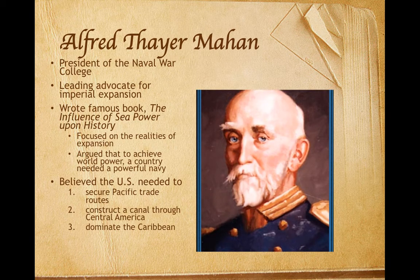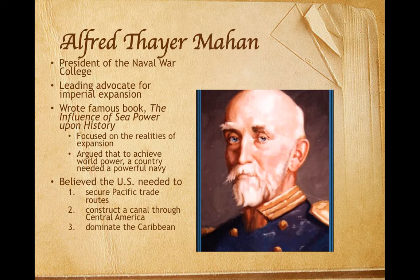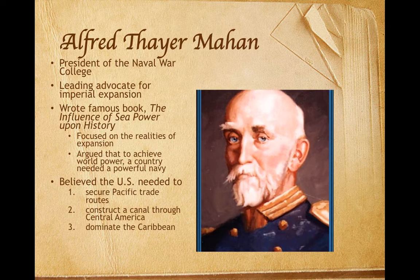Alfred Thayer Mahan, president of the Naval War College, was America's leading advocate for imperial expansion. Theodore Roosevelt was one of Mahan's followers. In his book, The Influence of Sea Power Upon History, Mahan focused on the harsh political realities of expansion. He argued that to achieve world power, a country needed a powerful navy, a large merchant marine to supply its sailors, and colonies and naval bases to provide coaling stations for steamships and to create the trade needed to support its merchant ships. Because other powers were also competing for naval supremacy and world markets, Mahan believed it was essential for Americans to seize control of Pacific trade routes, construct a canal through Central America, and dominate the Caribbean region, thereby controlling sea lanes from the Caribbean Sea across the Pacific Ocean all the way to China and Japan.